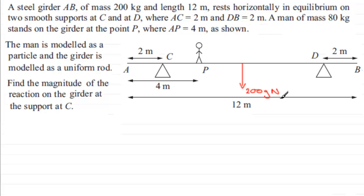We've got the mass of the man is 80 kilograms, so the man is going to have a weight acting downwards on the girder, and that's going to be 80G Newtons.